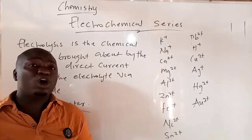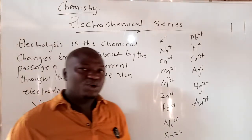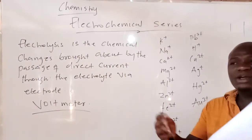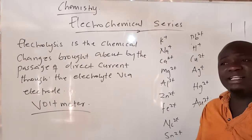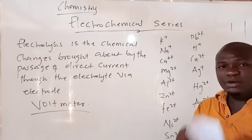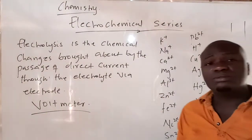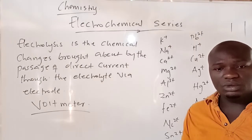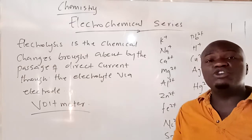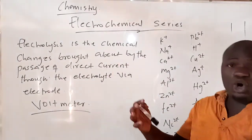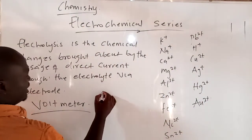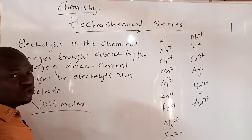When metals lose an electron, they become positively charged. When they gain an electron, metals become negatively charged. The reason why metals, or elements, either gain or lose an electron is because they want to attain either the octet structure or the duet structure.